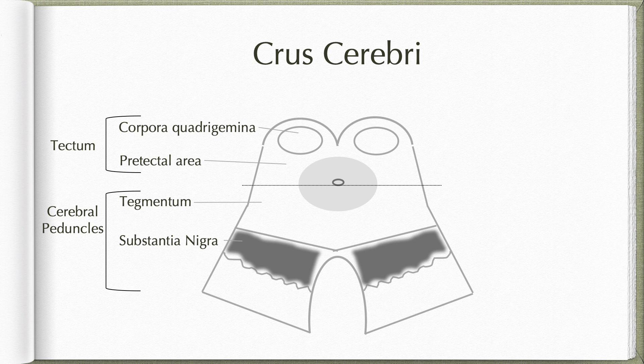First let us begin with the crus cerebri. Crus cerebri form the anterior most parts of the cerebral peduncles. They represent the basal part of the brain stem, so they contain all the descending fibers coming from the cerebral cortex. The fibers which start from the cerebral cortex will first descend to the corona radiata, then through the internal capsule, and when they reach the midbrain they collect together to form the crus cerebri.